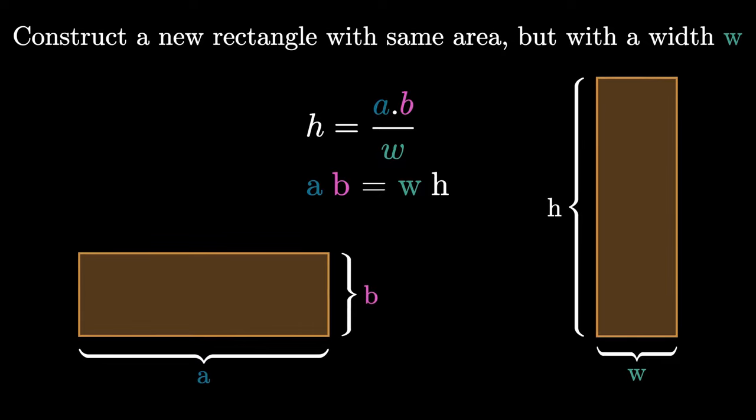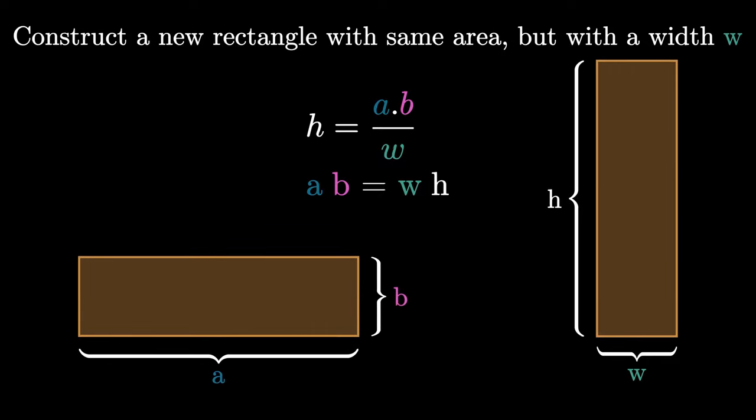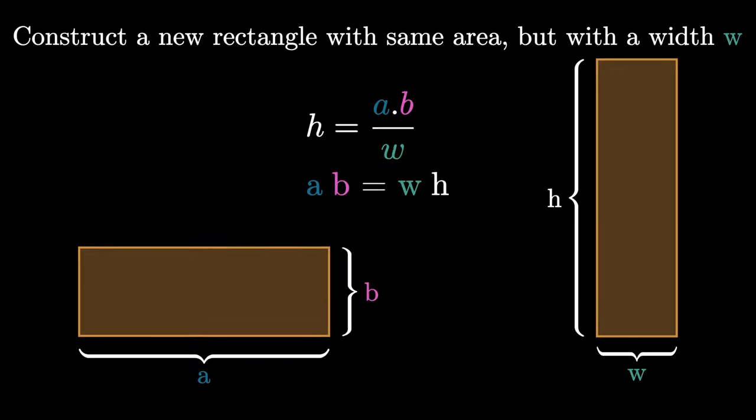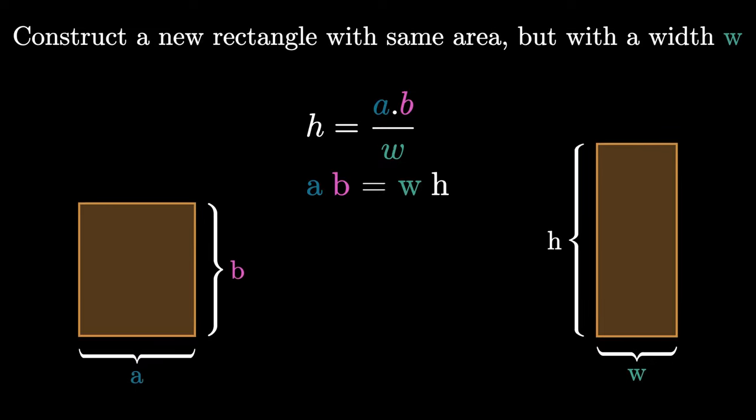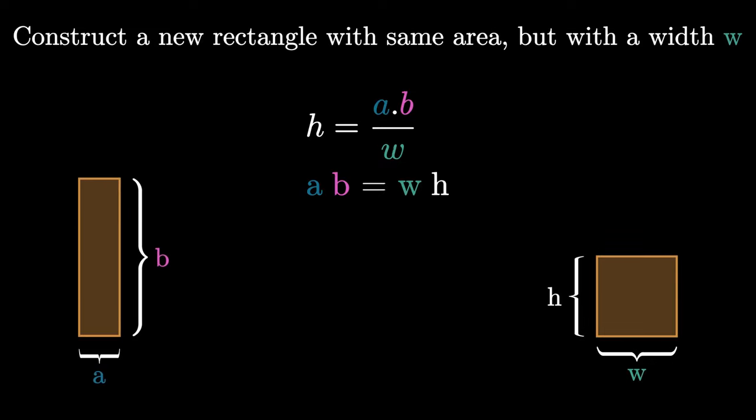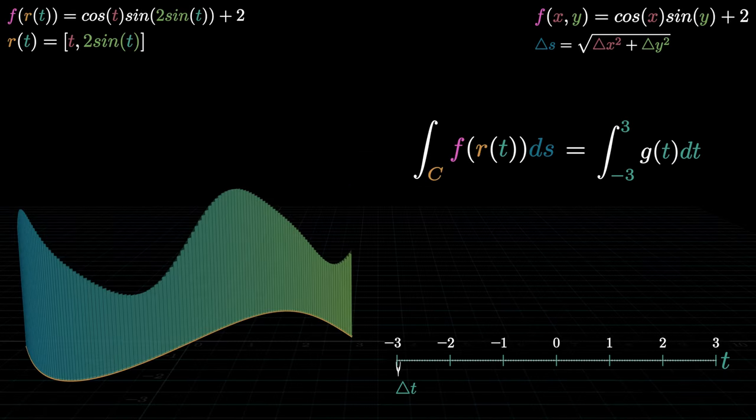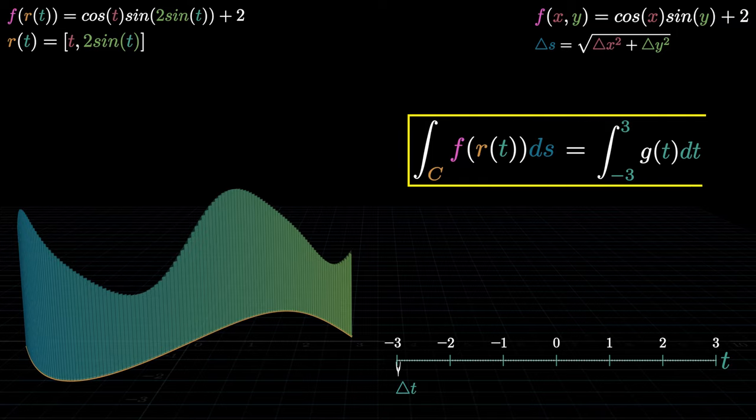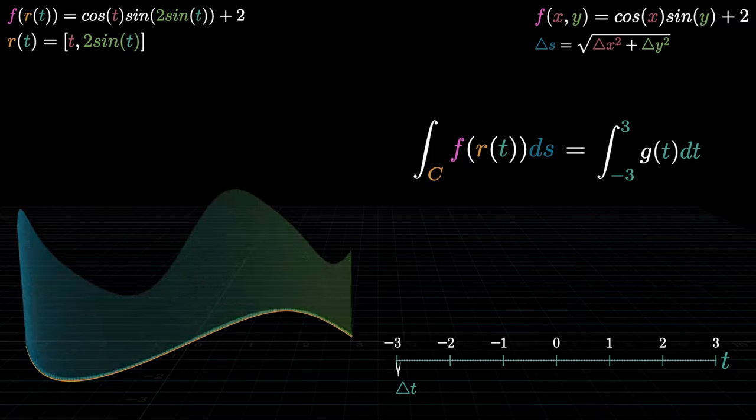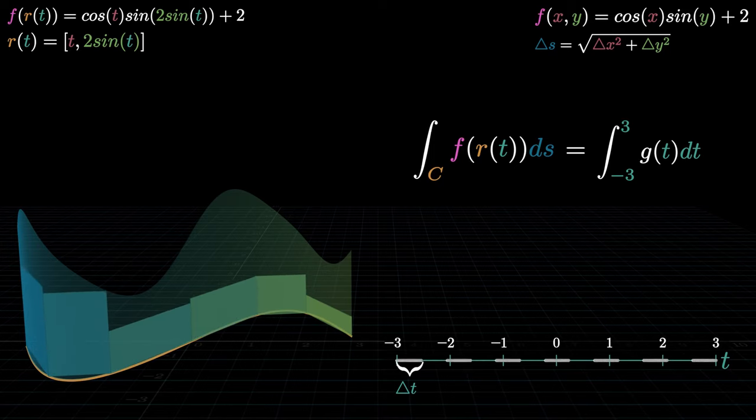In essence, we are rescaling the given rectangle such that its width is always W units and the height is such that the area is preserved. And guess what, that's exactly what's happening under the hood with the equation here. I'll reduce the number of rectangles for clarity, we'll crank it back to infinity in a while.